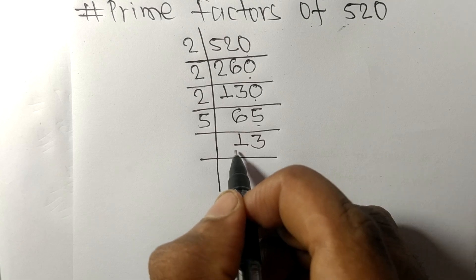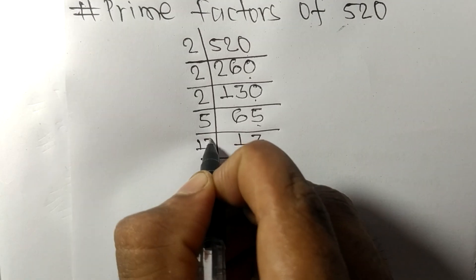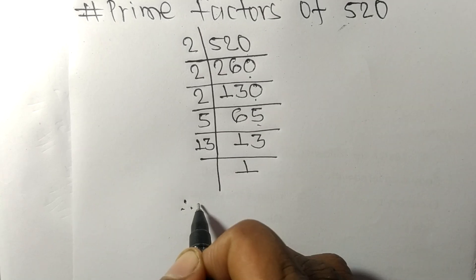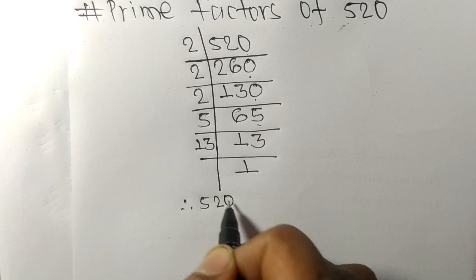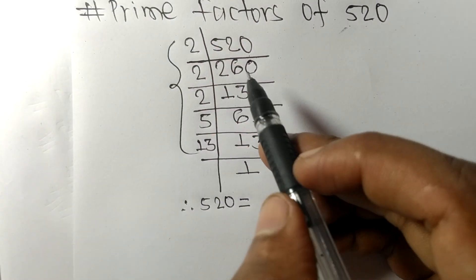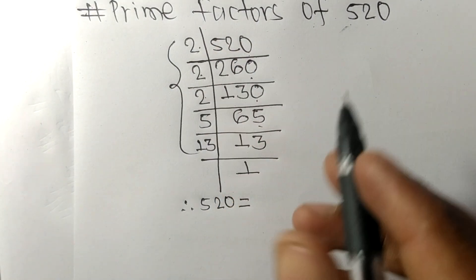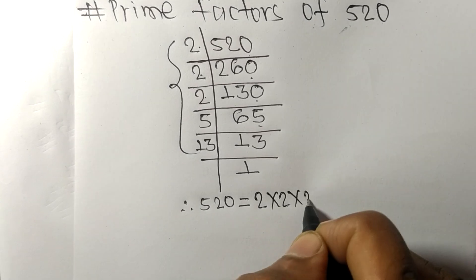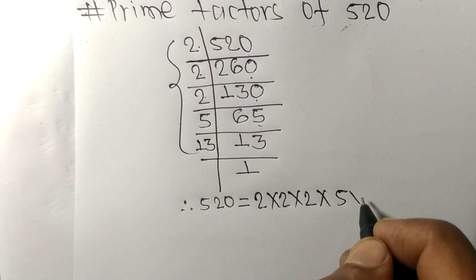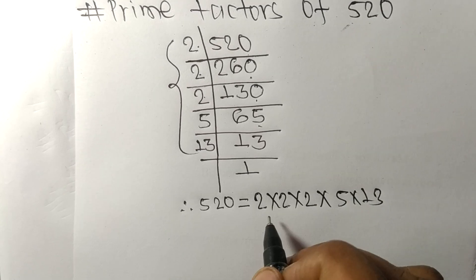So it is divisible by 13 itself and we get here 1. Therefore 520 is equal to, from this side we have 1, 2, 3 times 2. So 1, 2, 3 times 2 and 5 and 13.